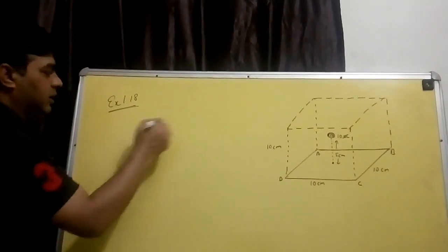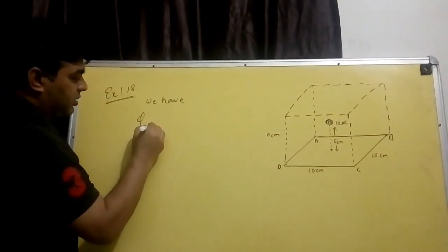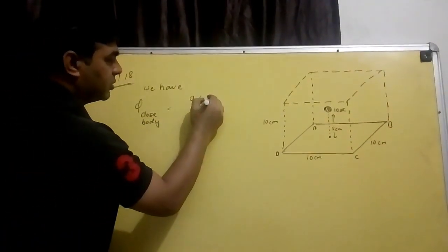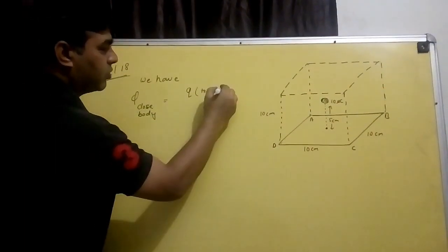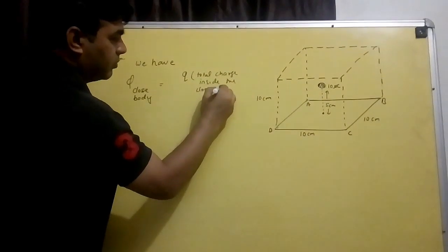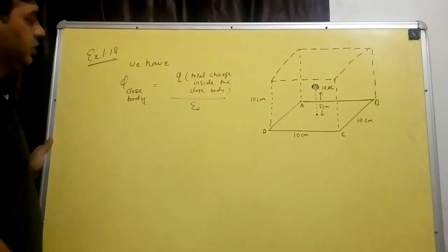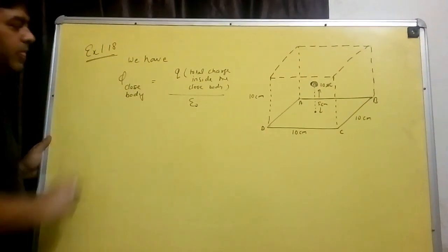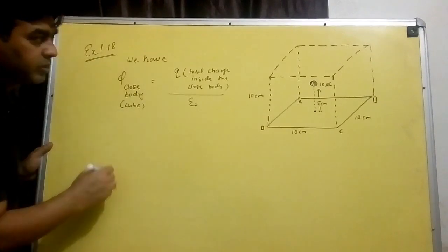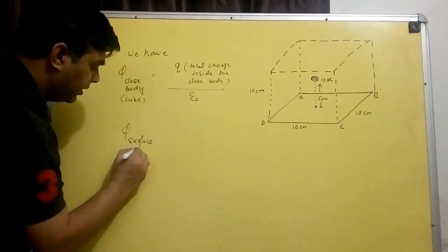When the closed body has charge, the formula for flux comes. What is the formula? Flux, which is for the closed body, is equal to charge - total charge inside the closed body - upon epsilon not. This is for a closed body, which is the cube.